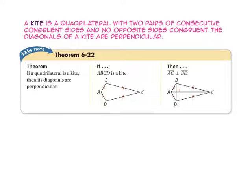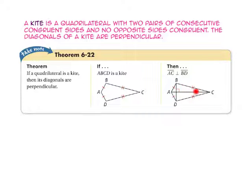A kite is a quadrilateral with two pairs of consecutive congruent sides and no opposite sides congruent. Side AB is congruent to side AD, and side BC is congruent to side DC — those are consecutive sides. The diagonals of a kite are perpendicular, so segment AC is perpendicular to segment BD. By the Side-Side-Side theorem, using the reflexive property, triangle ABC is congruent to triangle ADC. Since the triangles are congruent, their corresponding angles are also congruent: angle BAC is congruent to angle DAC, and angle BCA is congruent to angle DCA.